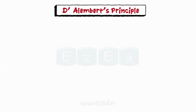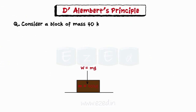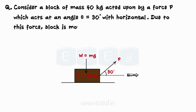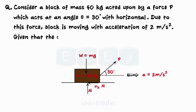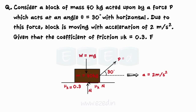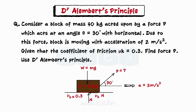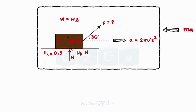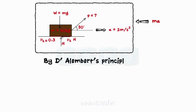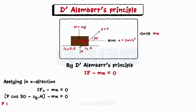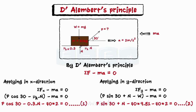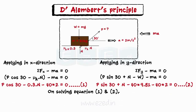Let us apply D'Alembert's principle. Consider a block of mass 40 kg acted upon by force P at an angle of 30 degrees with the horizontal. The block moves with an acceleration of 2 m/s². Given the coefficient of kinetic friction mu K equals 0.3, find force P. The inertia force M-A is applied in the opposite direction. By D'Alembert's principle, the summation of all forces and the product of mass and acceleration equals zero. Applying D'Alembert's principle in the x direction gives equation 1, and in the y direction gives equation 2. Solving equations 1 and 2 simultaneously yields the value of force P.